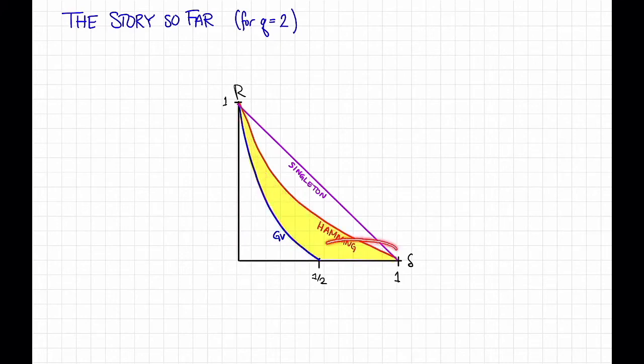Let's focus in on this big gap here. This gap might make you wonder whether or not it's possible to get trade-offs here. That is, for a binary code, is it possible to have distance greater than a half and rate greater than zero? It turns out that the answer is no, and this is what the Plotkin bound tells us.